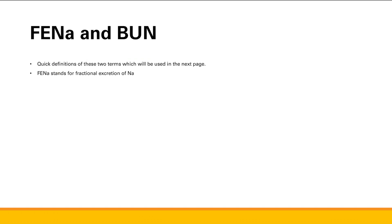With lower blood pressure, what's the kidney going to do with sodium? Remember the renin-angiotensin-aldosterone axis — it's going to trigger increased sodium absorption, both in the proximal convoluted tubule through angiotensin 2 and in the collecting ducts through aldosterone. So you're going to increase absorption, meaning the fraction of sodium excreted over the amount filtered is going to decrease, because there's less excretion since you reabsorb more sodium.